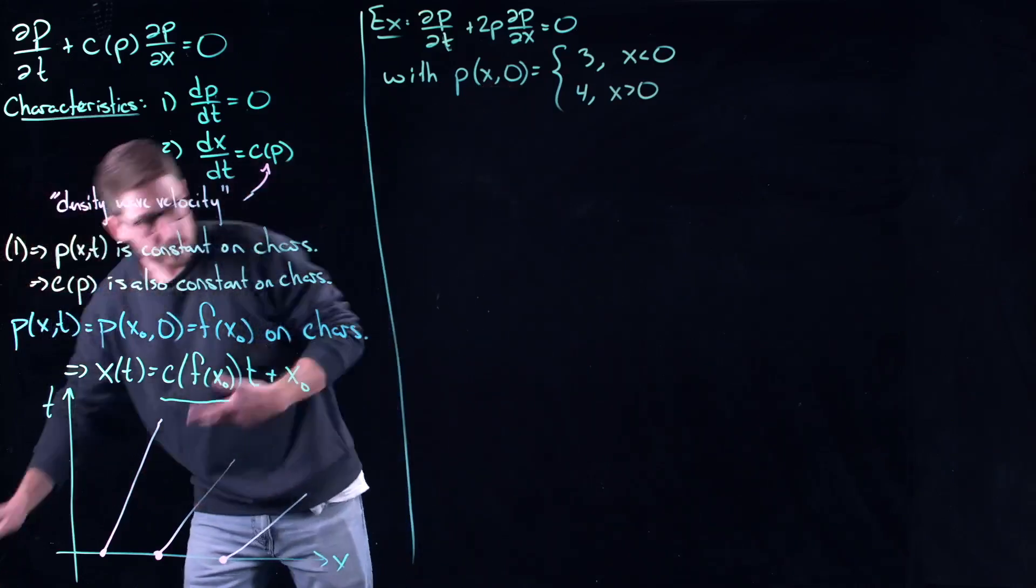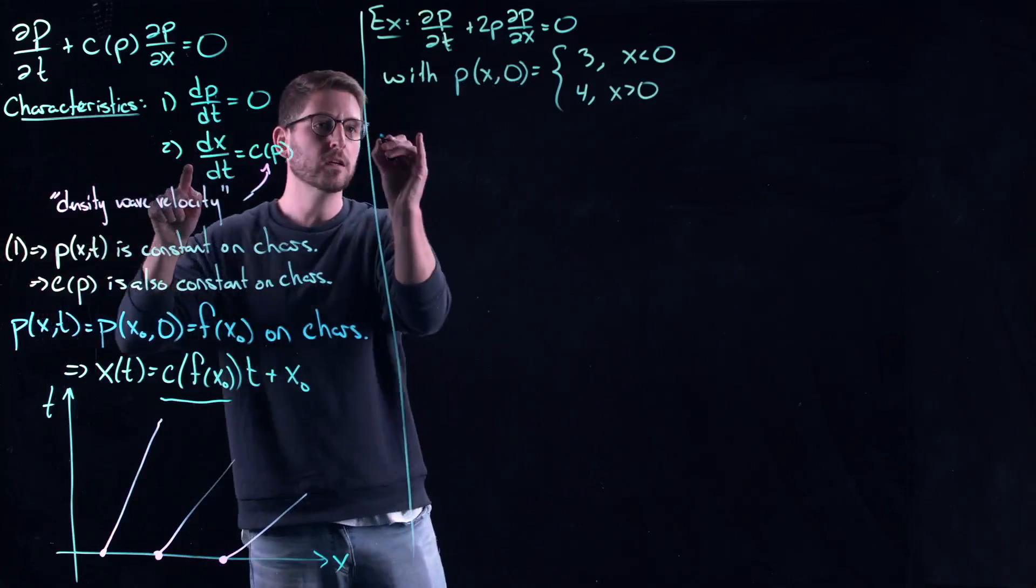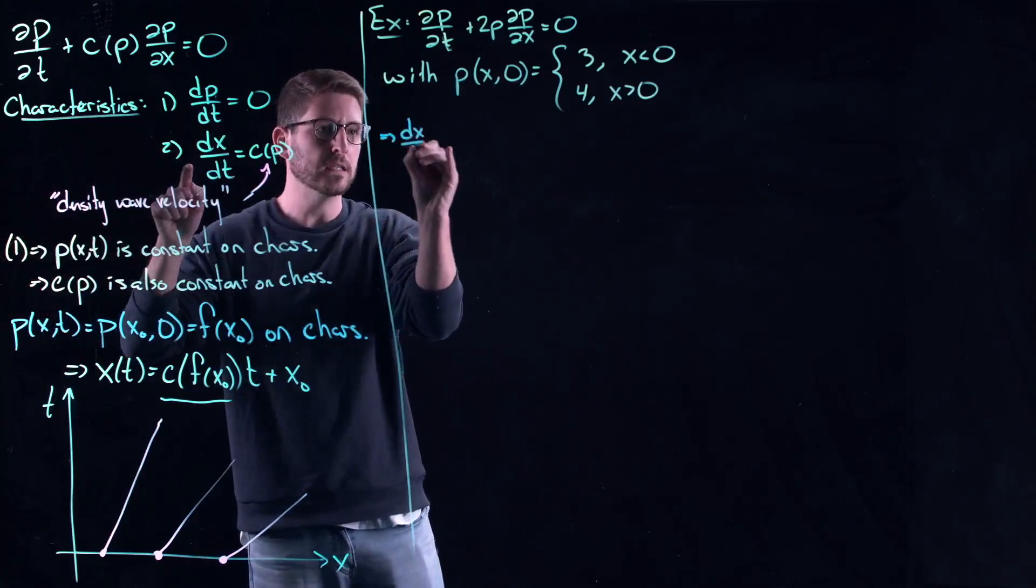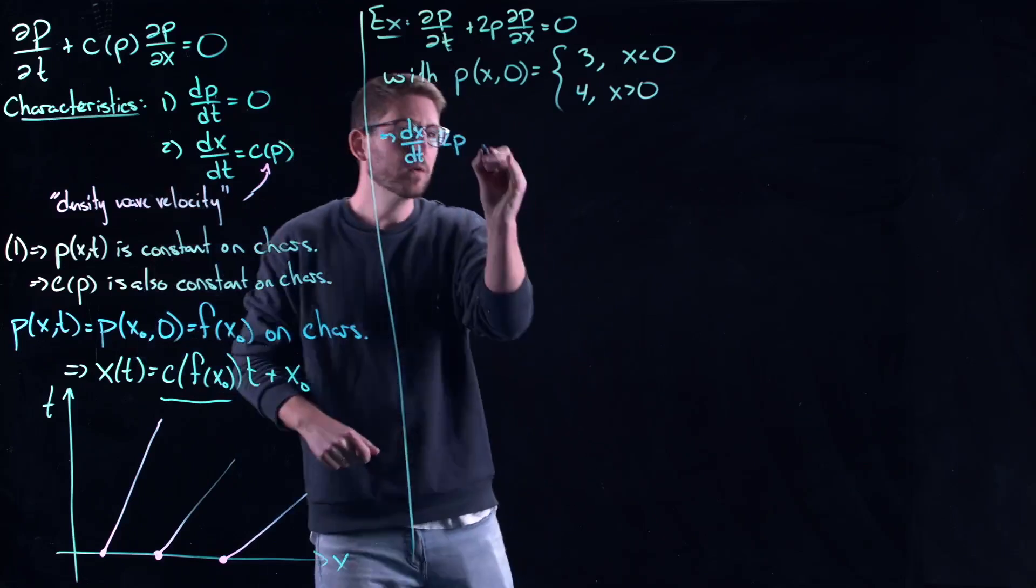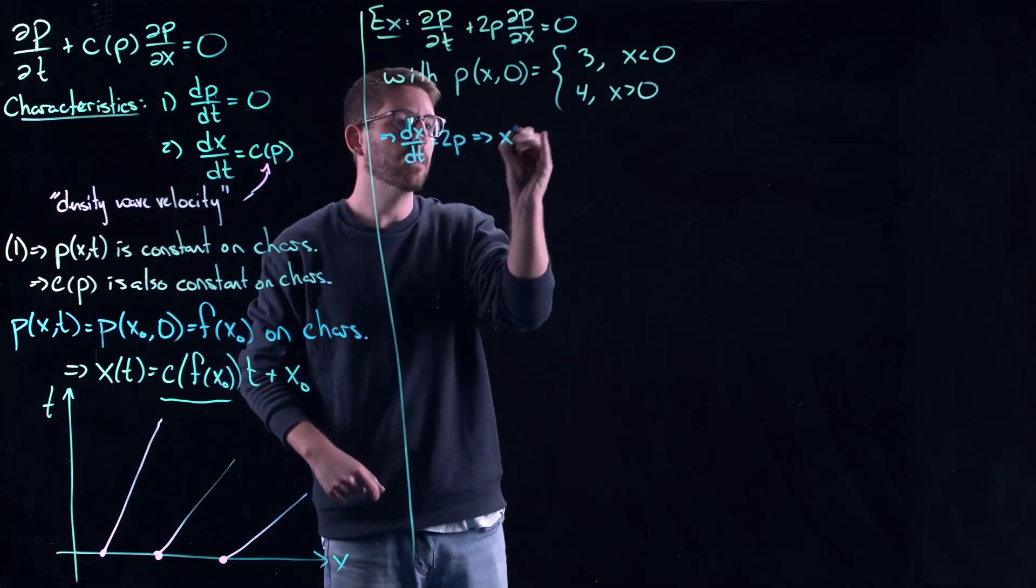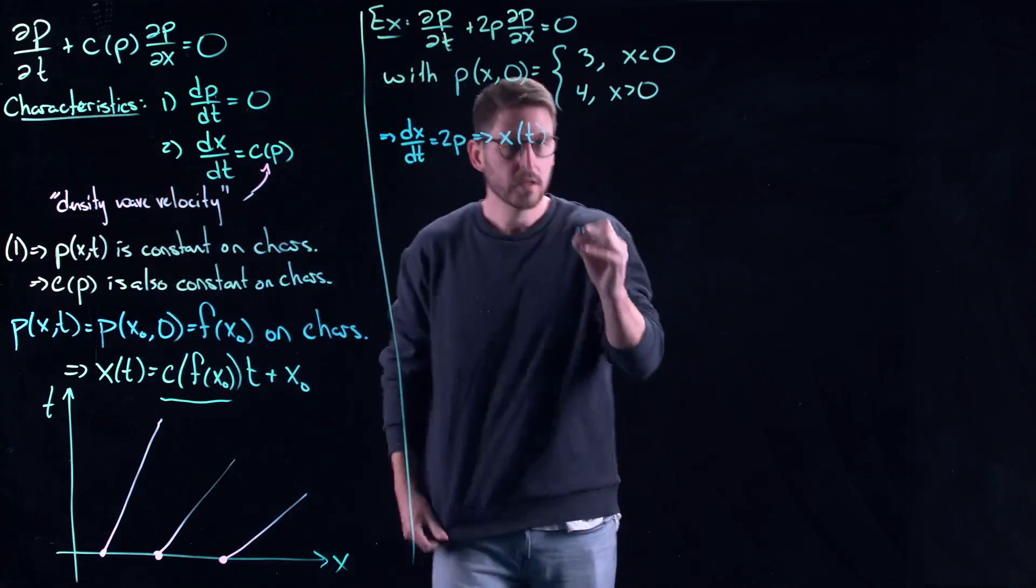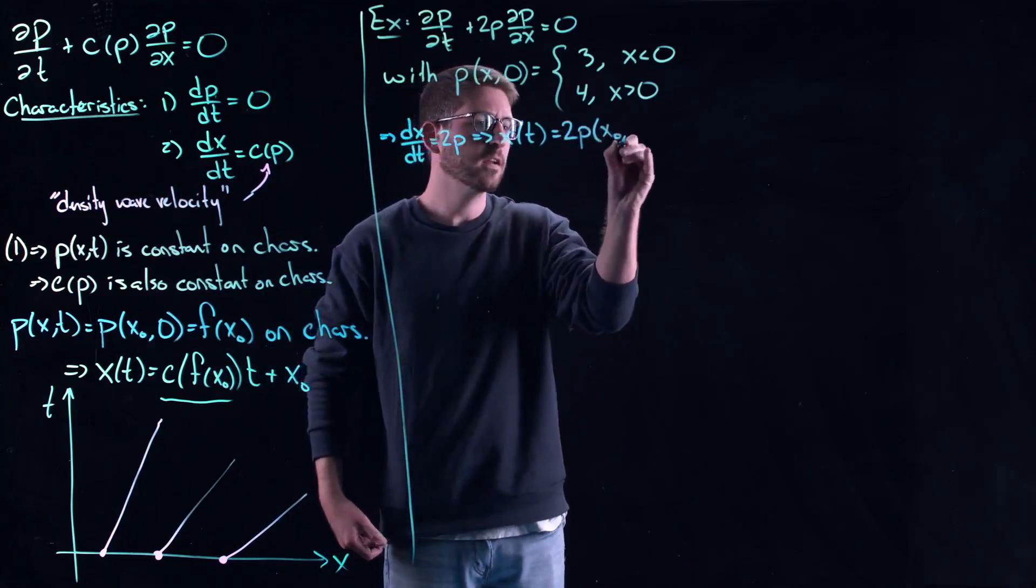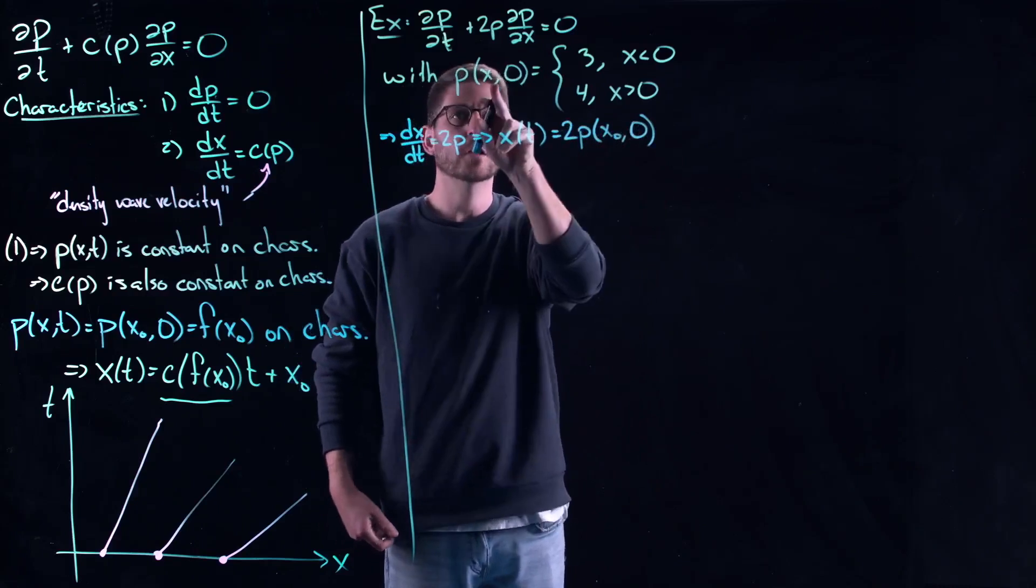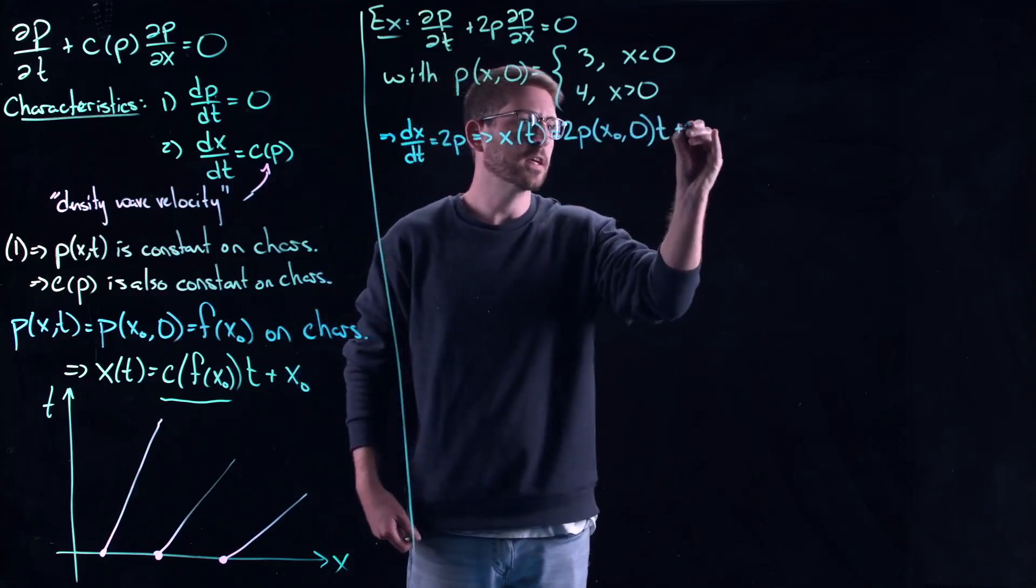All right, let's just start plugging things in. The characteristic equation here is going to give me dx/dt = 2ρ. Which tells me that my characteristic curves, or my characteristic lines in this case, is equal to 2 times ρ(x₀,0), the initial condition. This is just my f times t plus x₀.